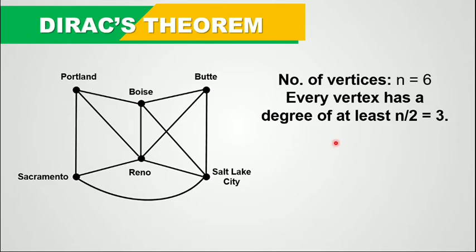For example, Portland has a degree of 3 — so edges 1, 2, and 3. Butte has a degree of at least 3 — so 1, 2, 3. And Boise has a degree of 4 — so 1, 2, 3, and 4. So if we count the degree of every vertex in this graph, it is at least half of the number of vertices.